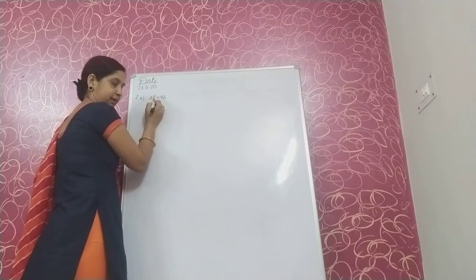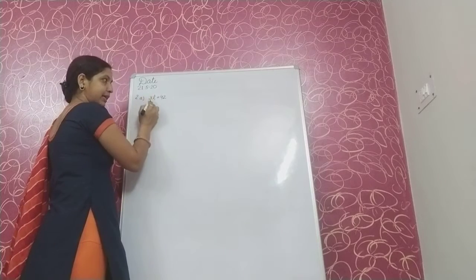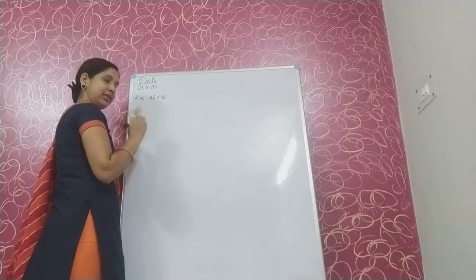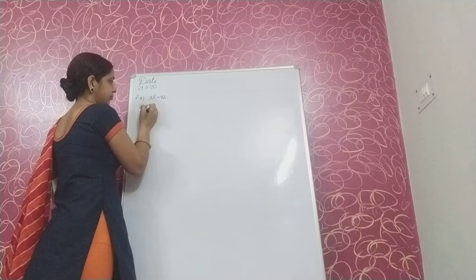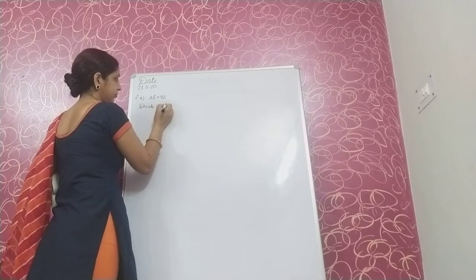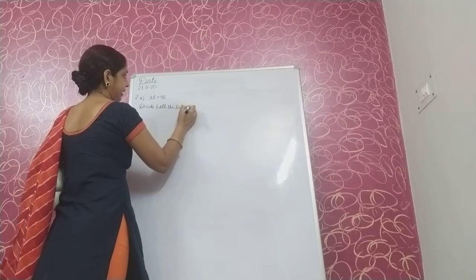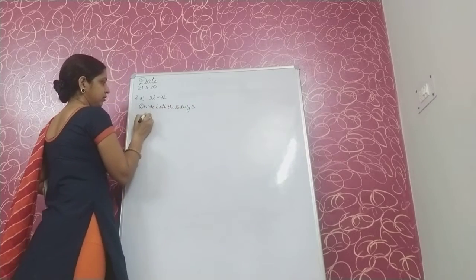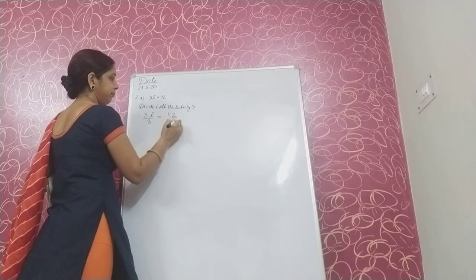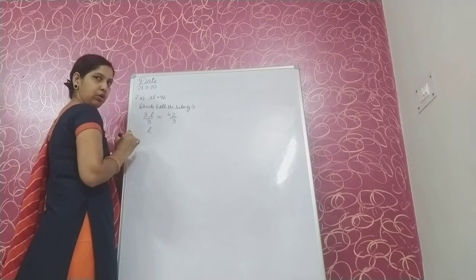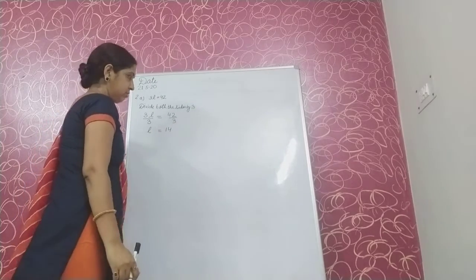Here we have variable L. 3 is multiplied with L and we have to remove this 3. Since 3 is multiplying with the variable, we will divide both sides by 3. 3L upon 3 is equal to 42 upon 3. On the left we have only L. On the right side we have 14. So the value of L is 14.